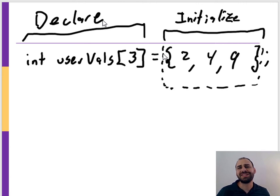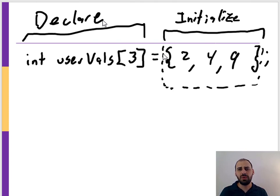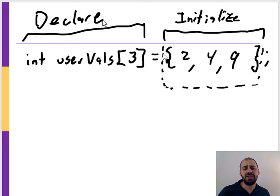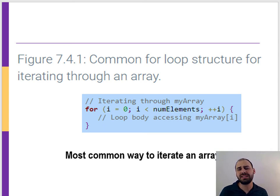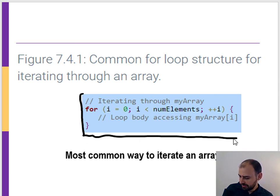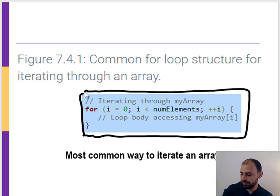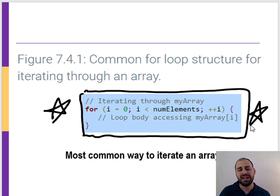This curly bracket initialization syntax can only be used on the same line that we declare the array. Part of that has to do with how memory is allocated. Both approaches work; this is just a shorthand you should know. A very common pattern when working with arrays is the for loop we've already seen for iterating through them.